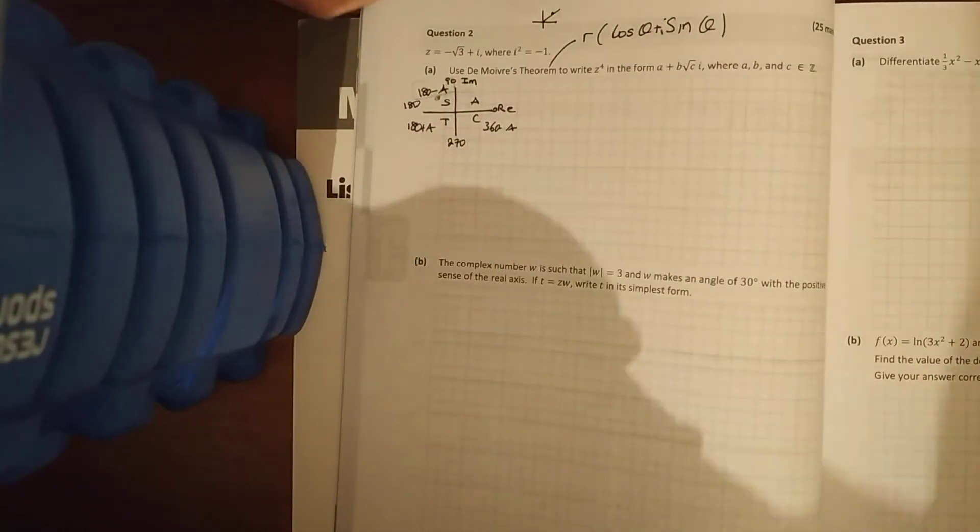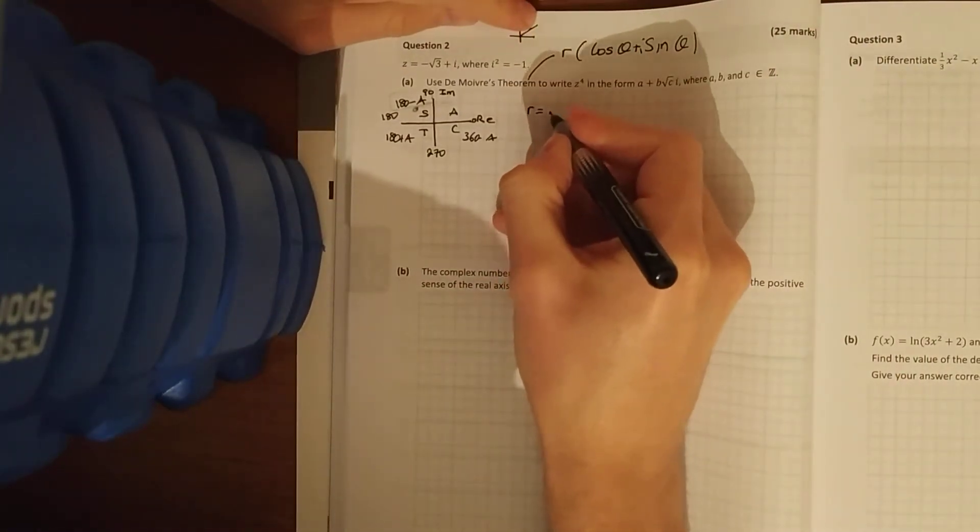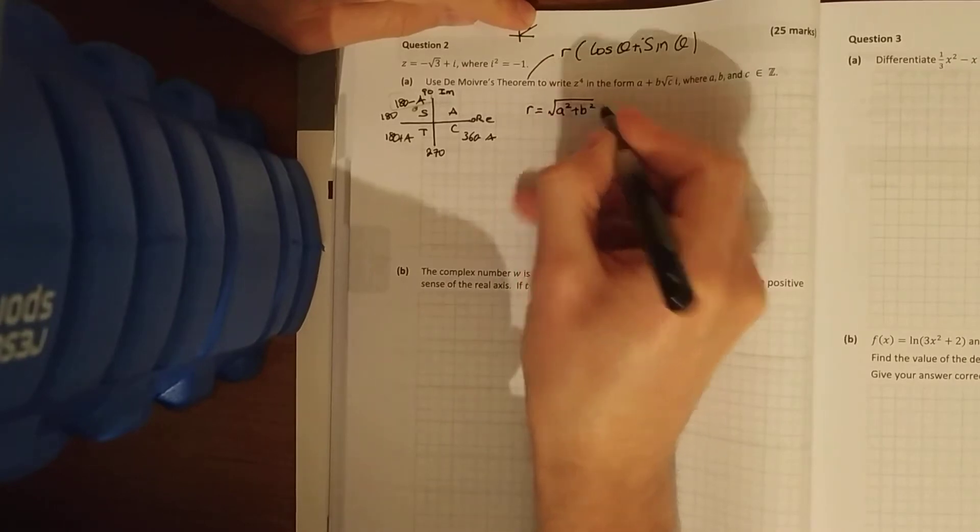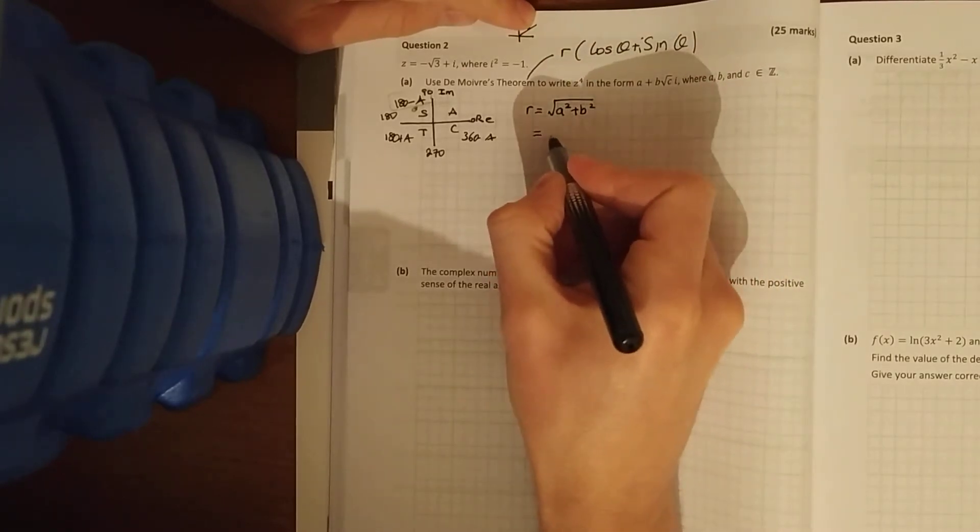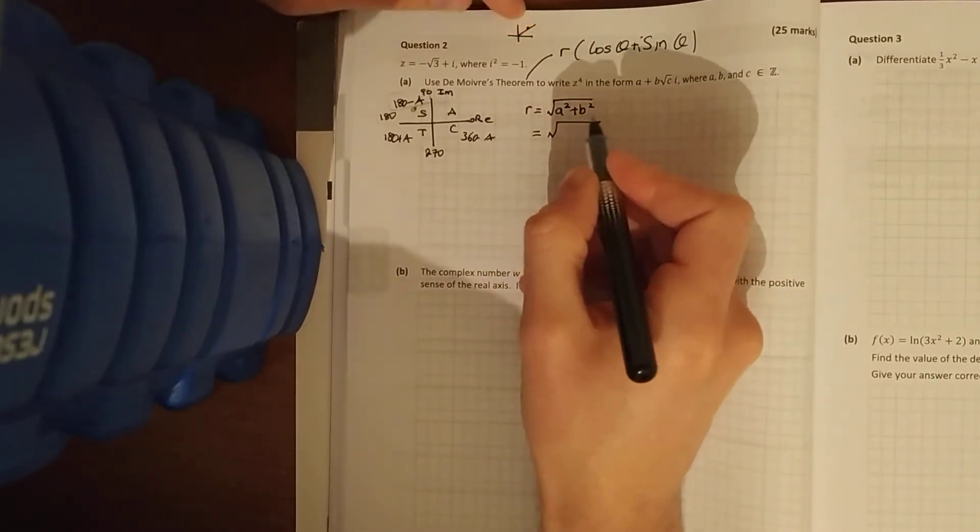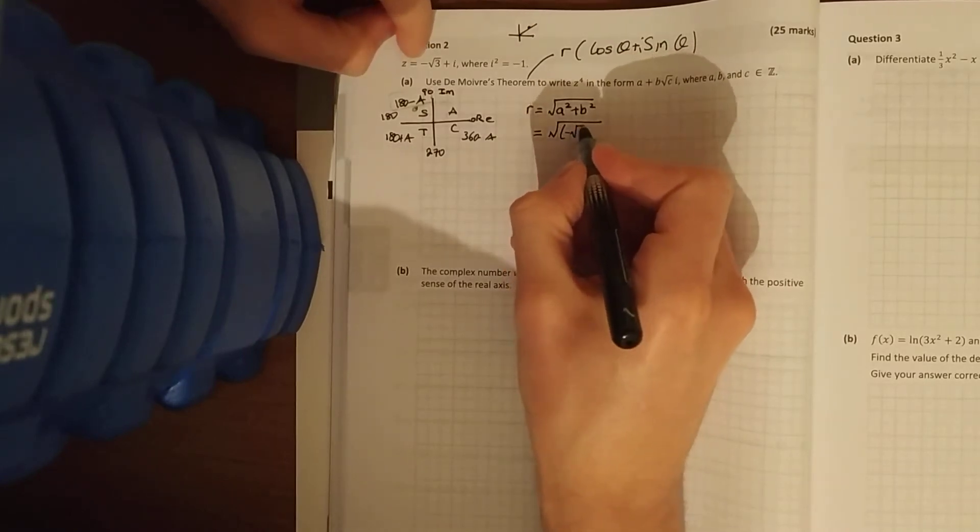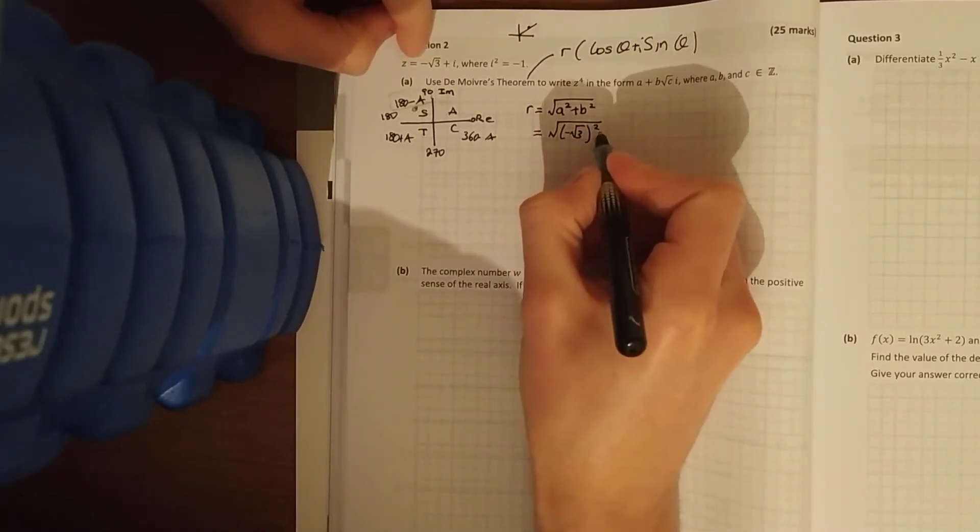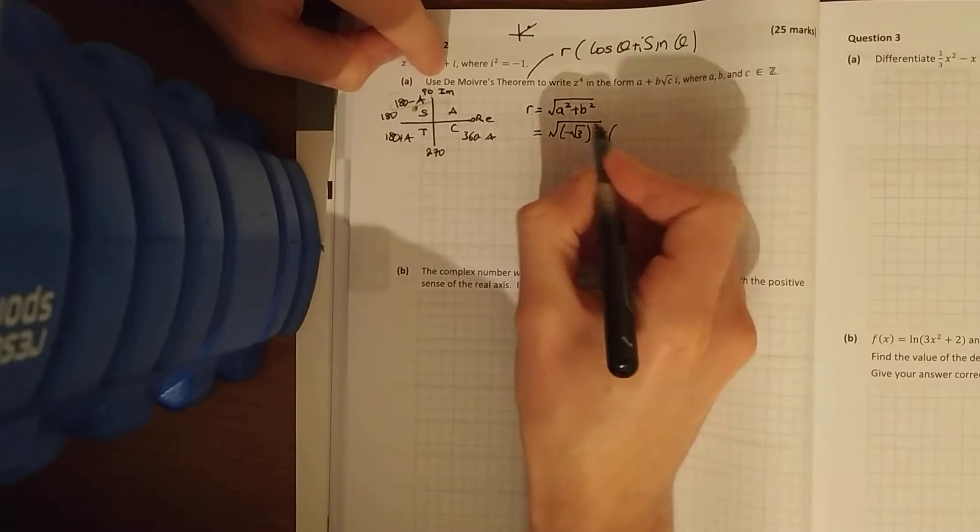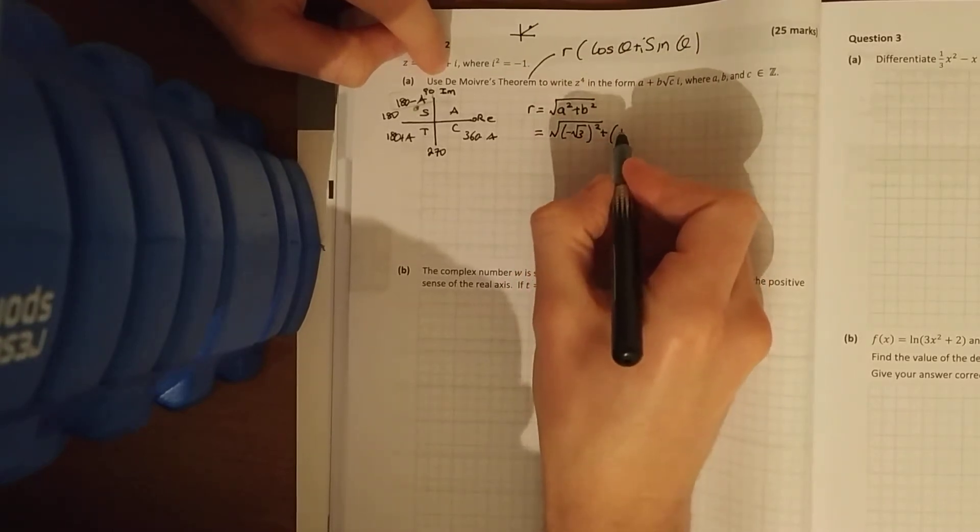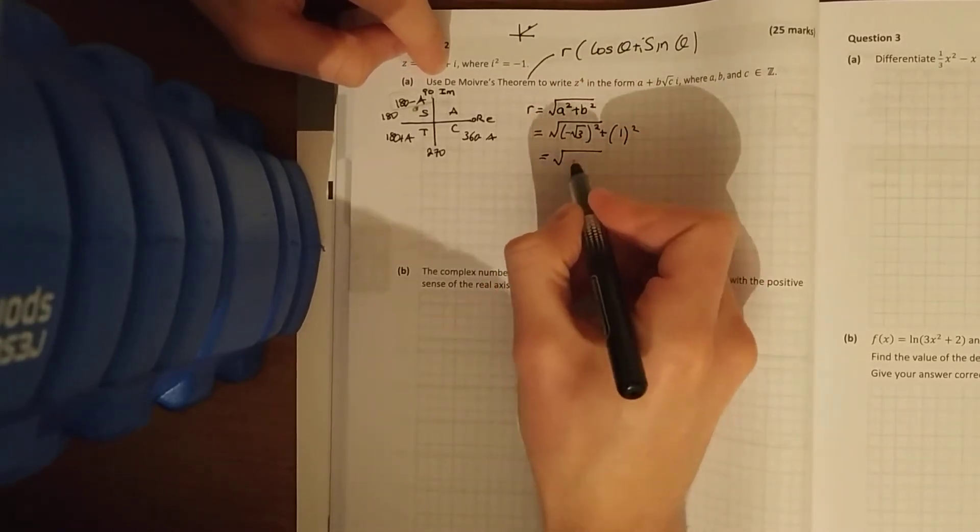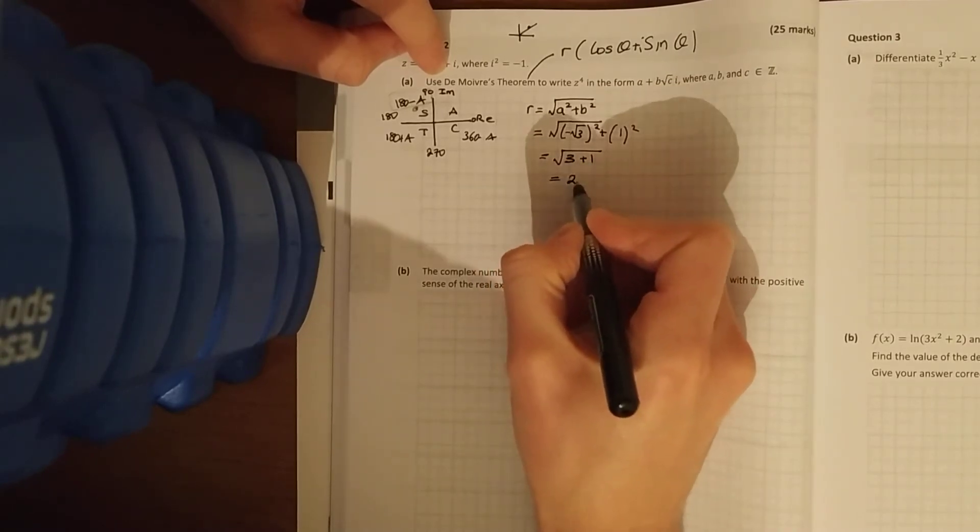So the first thing, work out the modulus, square root of a squared plus b squared, or square root of real plus imaginary. Minus root 3, make sure you have your brackets, squared plus, ignore your i, but what number's in front of it, what's your coefficient, is 1. Tidy that up, square root of 3, square root it all in your calculator if you like, and you get a modulus of 2.